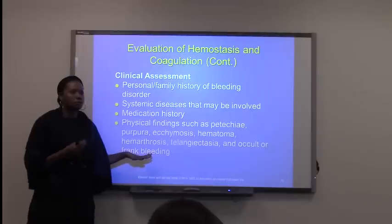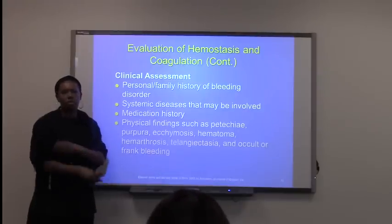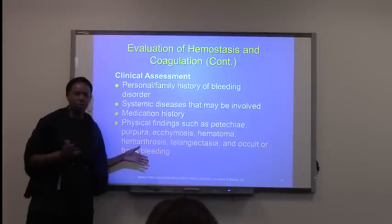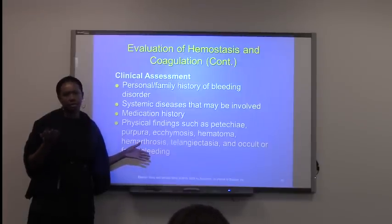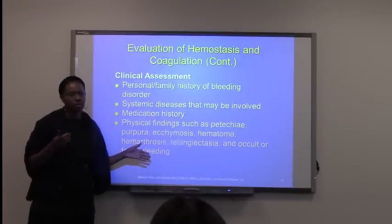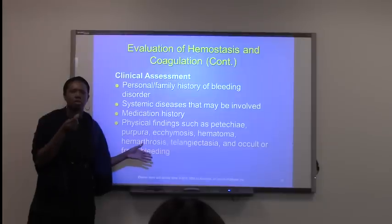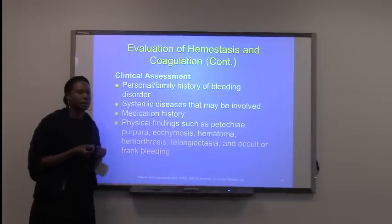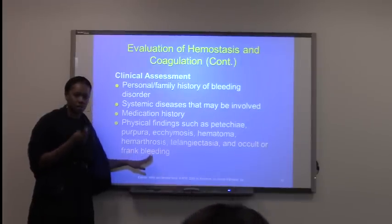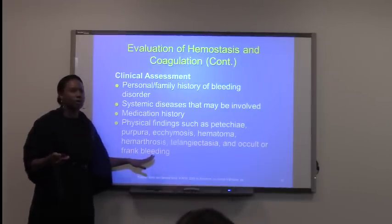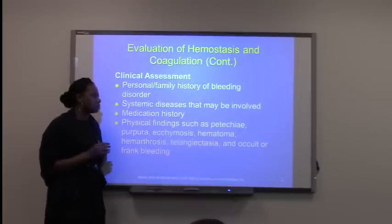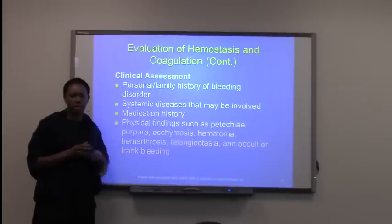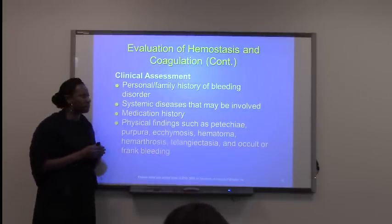Frank blood is fresh blood, more of a bright red in color. Going back to the colorectal example — if a person has a hemorrhoid and the epithelium is injured, that will give them frank bleeding, which is different from occult bleeding. A hemorrhoid would produce frank bleeding, not occult.